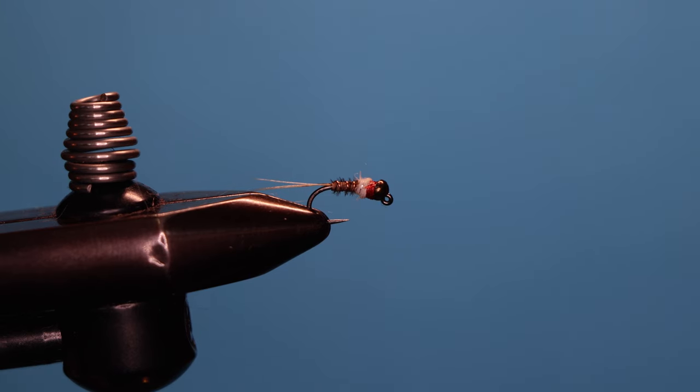This is my take on the Frenchie. It's a great fly that looks like a lot of mayflies, and this one's got a little bit of added color to it. I use a white flashy dubbing and the red thread collar.